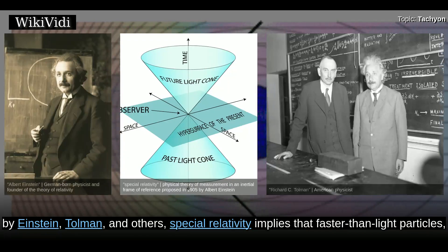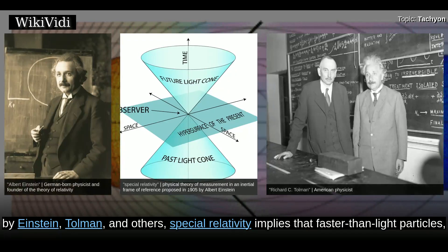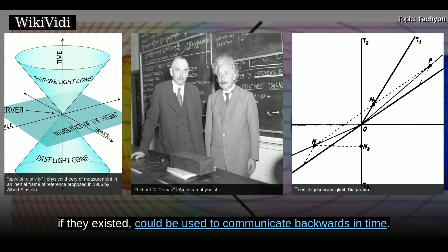As noted by Einstein, Tolman, and others, special relativity implies that faster-than-light particles, if they exist, could be used to communicate backwards in time.